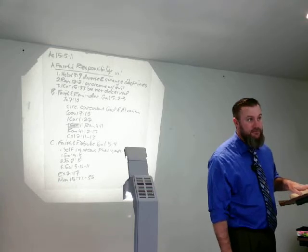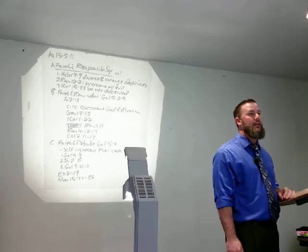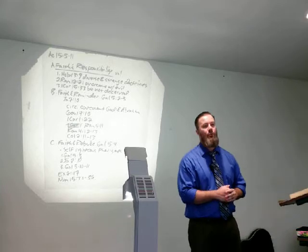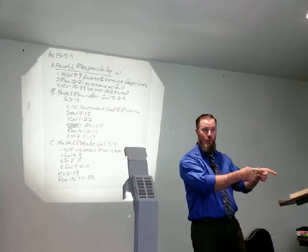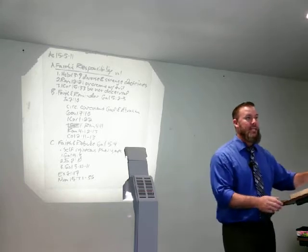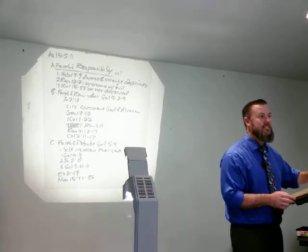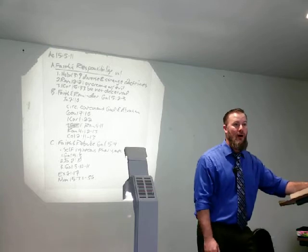Romans 10:4: For Christ is the end of the law for righteousness to everyone that believeth. It either is or it isn't. What's your authority? Who's your authority? If it's a King James Bible, you got it. All you have to do is read and believe. There it is. And follow. God will help you follow it too.